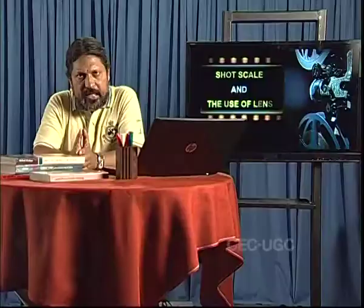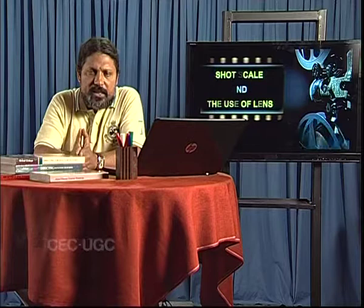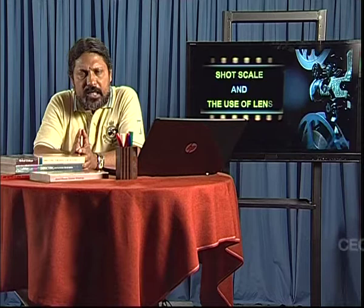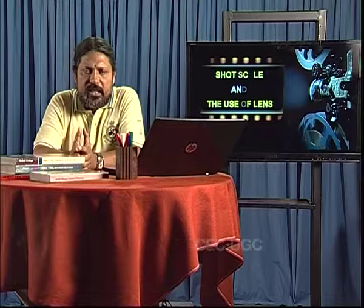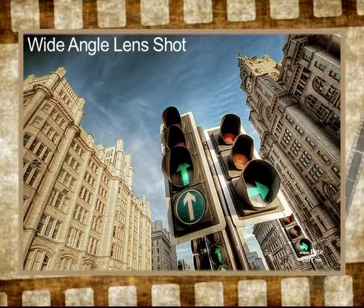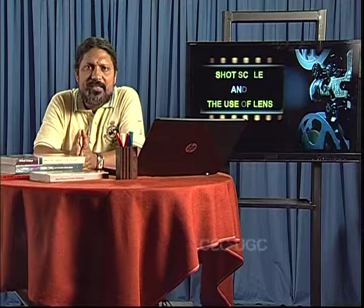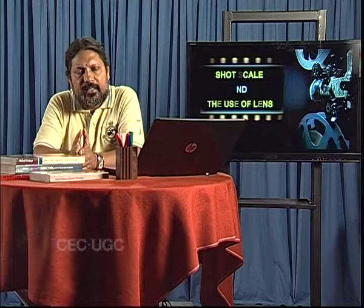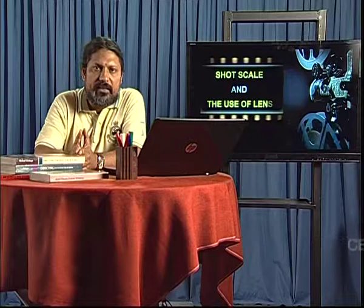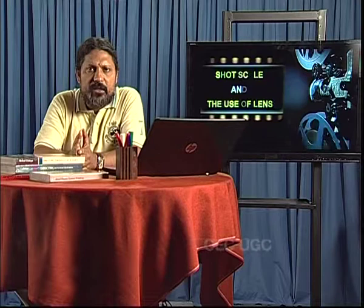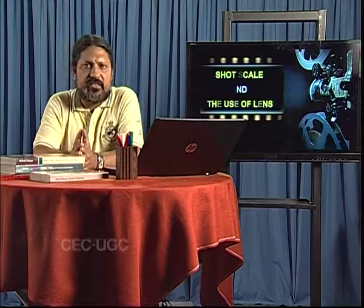A wide-angle lens usually distorts the horizontal and vertical lines, creating a bulge. When a photographer has to photograph an object in a cramped space, he usually uses a wide-angle lens to take in the maximum possible real world. The wide-angle lens provides the photographer with the widest possible angle of coverage. A wide-angle lens also distorts distances between planes — the distance between the foreground and the mid-ground or the mid-ground and the background looks exaggerated.